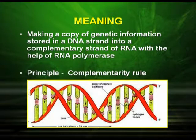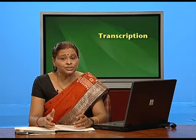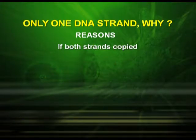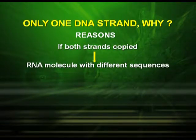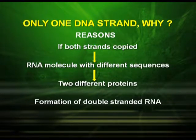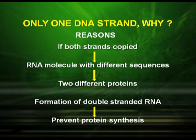As you can clearly see in the picture, the complementarity rule means A pairs with T and G pairs with C. Now, there is a very important question: out of the two DNA strands, why is only one DNA strand transcribed? If both strands are copied, the RNA molecules will have different sequences, resulting in two different proteins. Another important issue is the formation of double-stranded RNA, which would prevent protein synthesis.